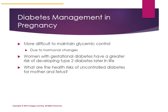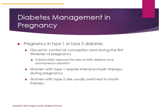There are a number of health risks for uncontrolled diabetes in the mother experiencing gestational diabetes — read about them in your text. If you have type 1 or type 2 diabetes and become pregnant, it is important to maintain glycemic control throughout the pregnancy and even at conception to substantially reduce the risk of birth defects and spontaneous abortion. Women with type 1 diabetes who are pregnant require intensive insulin therapy, while women with type 2 are usually switched to insulin therapy to control blood glucose during pregnancy.